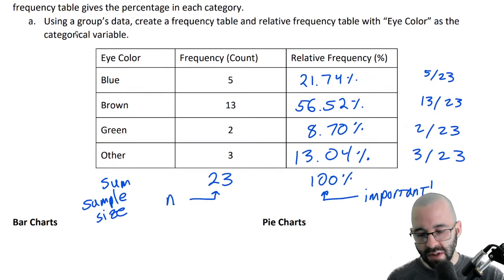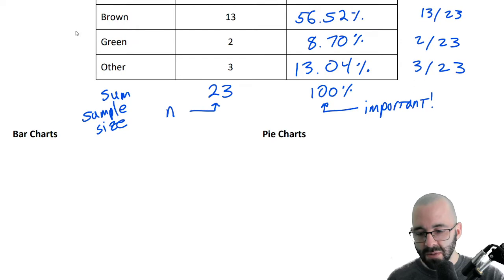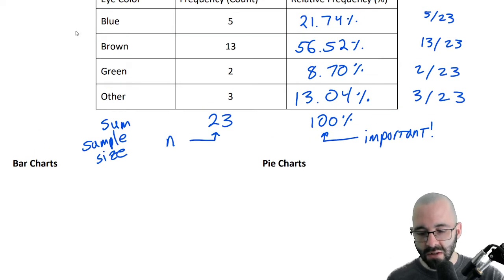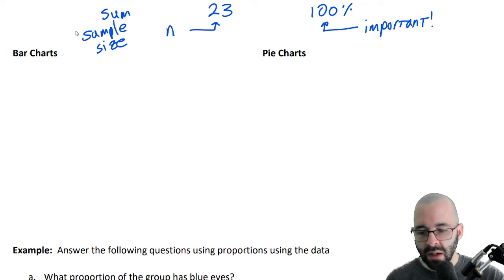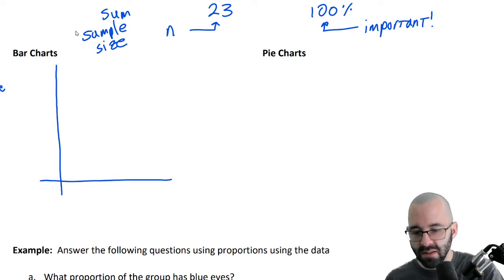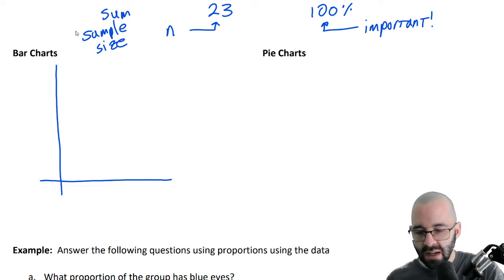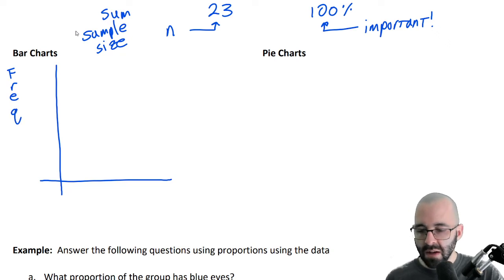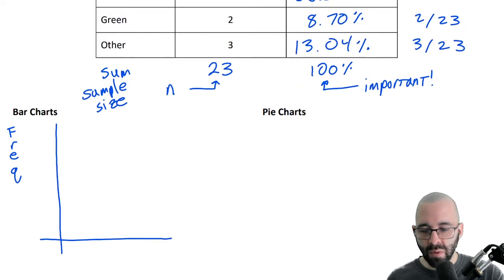We sometimes represent these with bar charts and pie charts — we've all seen these before. A bar chart shows the frequency on the y-axis. On the bottom, it's going to be the different categories: blue, brown, green, and other.